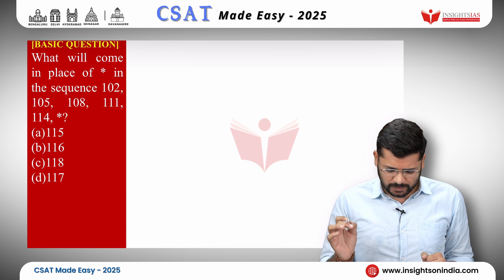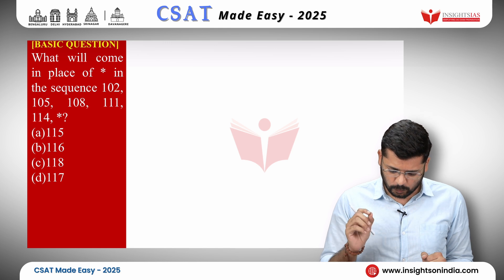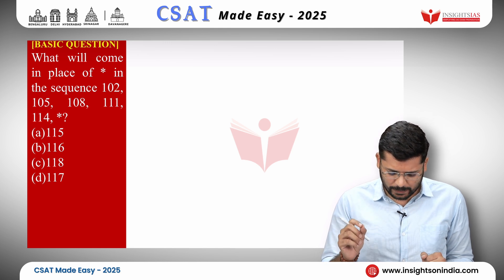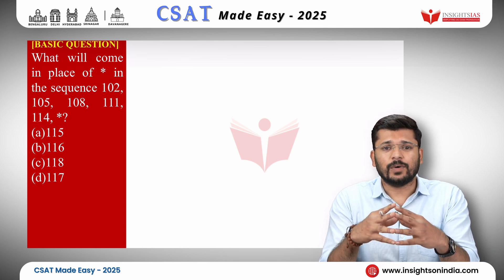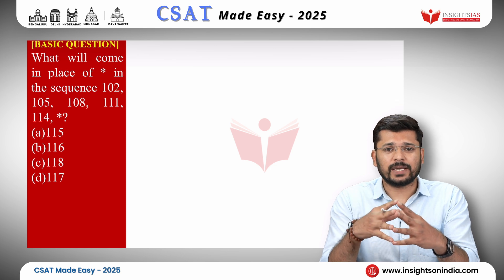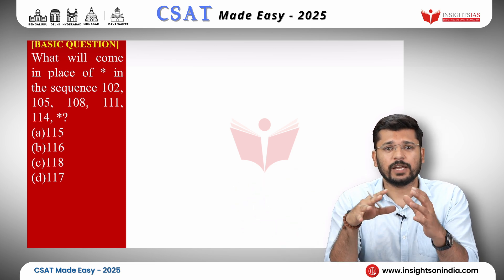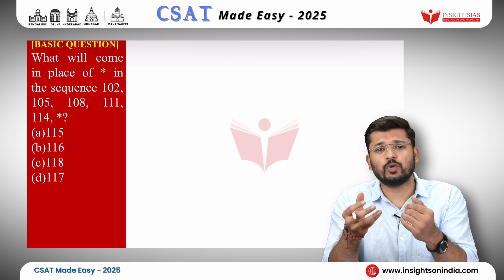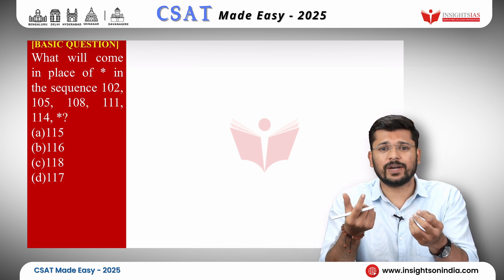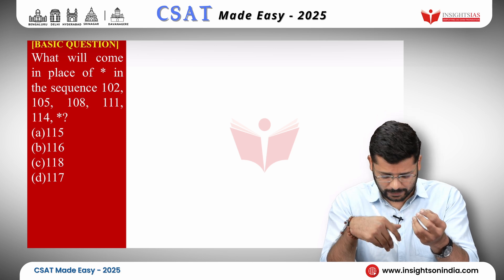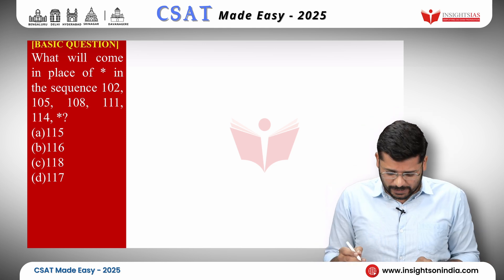We shall begin with the first question — a basic one. What will come in place of asterisk in the sequence 102, 105, 108, 111, 114, *? In number series, they give you a sequence of numbers. You have to identify the pattern based on which the numbers are placed, and find the number that fills the blank or asterisk. Let us see how it works.